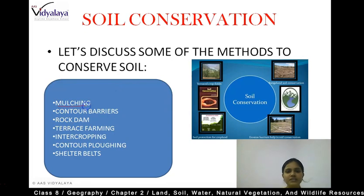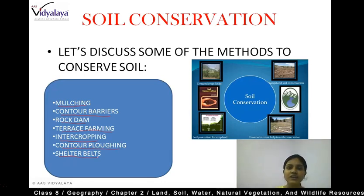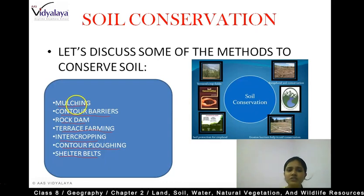First of all, let's see mulching. The first point is mulching, second is contour barriers, third is rock dam, fourth is terrace farming, fifth is intercropping, sixth is contour ploughing, and the seventh is shelter belts. If we want to conserve soil, the biggest problem is our farming activities. So, if we want to utilize these methods, they will conserve our soil, maintain soil fertility, and check soil erosion.